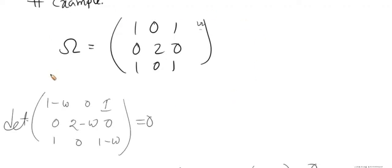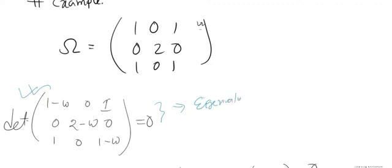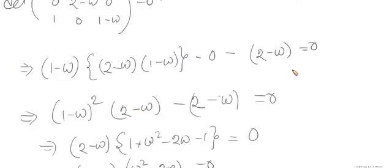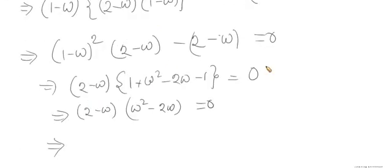Let's take an example. We denote our operator — a matrix in a finite-dimensional vector space — as a 3x3 matrix with specific elements. To find the eigenvalues, we use the characteristic equation. This will give us our eigenvalues, as we recall from previous lectures. I'm denoting the eigenvalues with omega. After calculating the determinant and simplifying, we arrive at our characteristic polynomial.